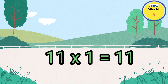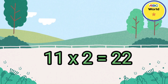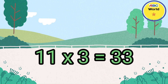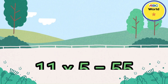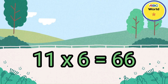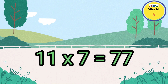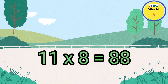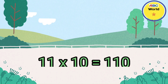11 ones are 11. 11 twos are 22. 11 threes are 33. 11 fours are 44. 11 fives are 55. 11 sixes are 66. 11 sevens are 77. 11 eights are 88. 11 nines are 99. 11 tens are 110.